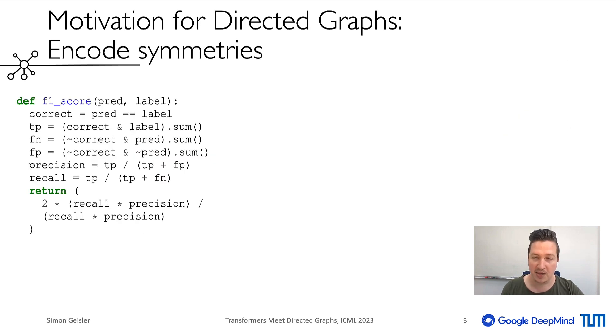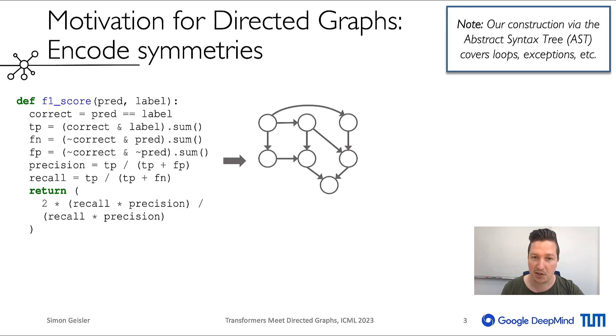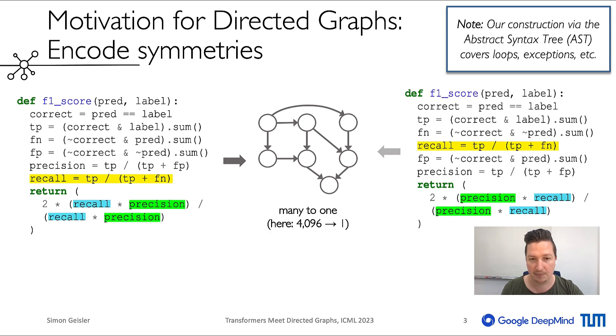Back to the encoding of symmetries. Code is often represented as a sequence of tokens. However, we show that there are benefits modeling the code as a directed graph, representing the dependencies between the different operations. Notably, there are many ways to permute these tokens while keeping the functionality unchanged.